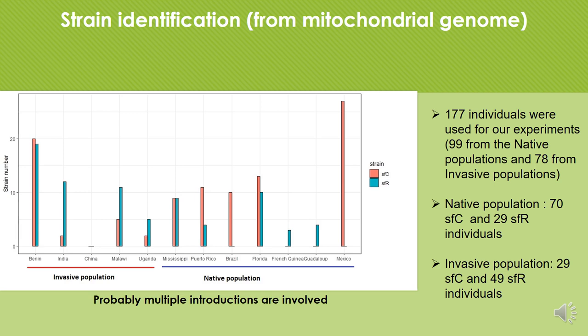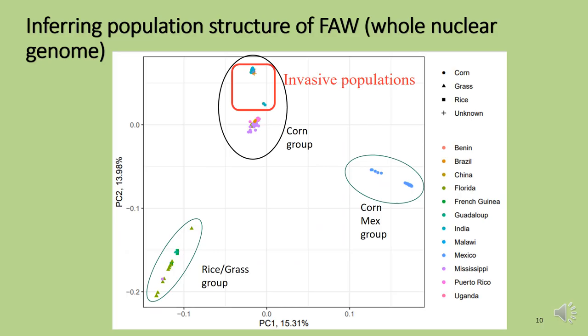This research showed that probably multiple introductions are involved in the spread of the insect. We then inferred the population structure of the fall army worm from the whole nuclear genome.